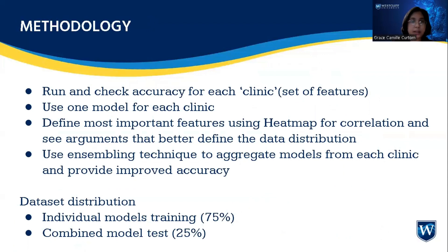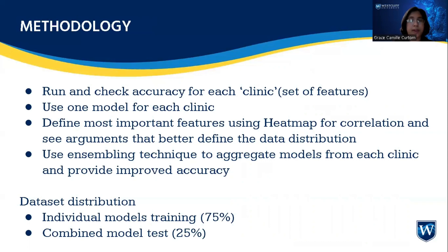For this, we run and check the accuracy for each clinic's set of features, and we leverage the fact that each clinic may use a different existing AI model. Then we use a heat map correlation to see arguments that better define the data distribution. Then we use an ensembling technique to aggregate the models from each clinic to provide a more improved accuracy in prediction. We also use a 75-25 ratio where 75% of the data is used for individual model training and testing, and the remaining 25% is used for combined model testing.